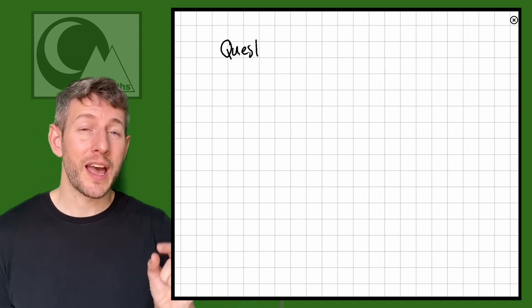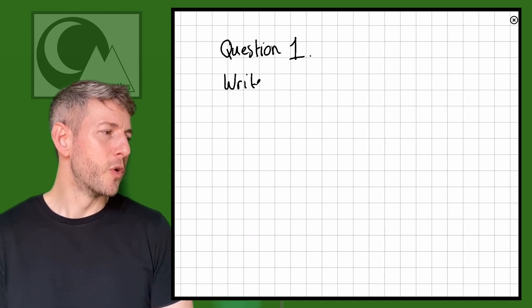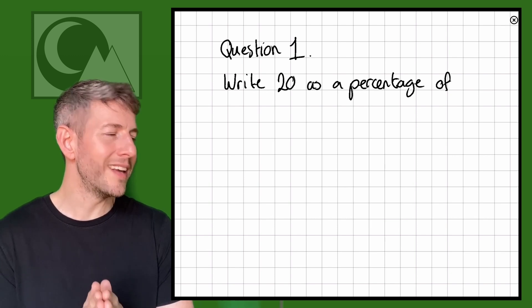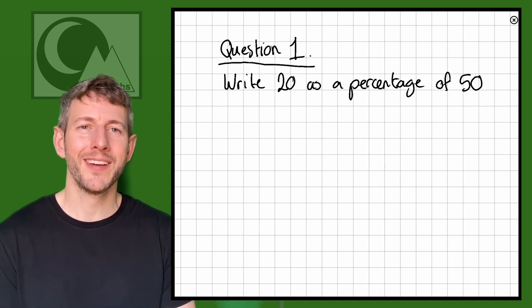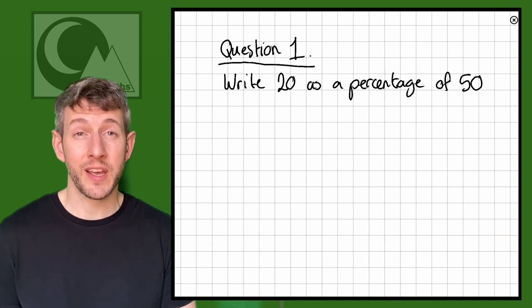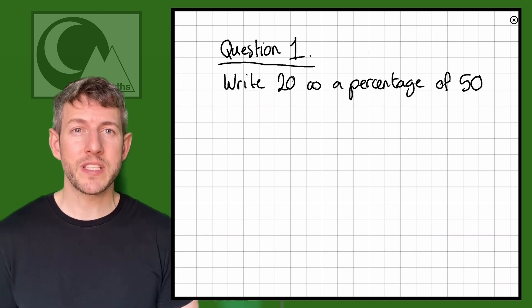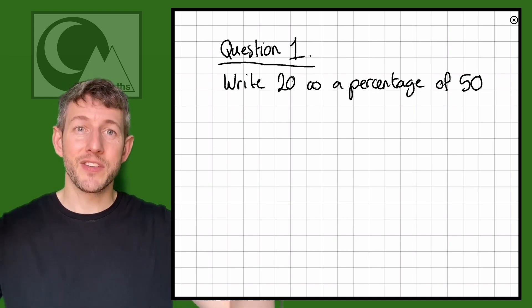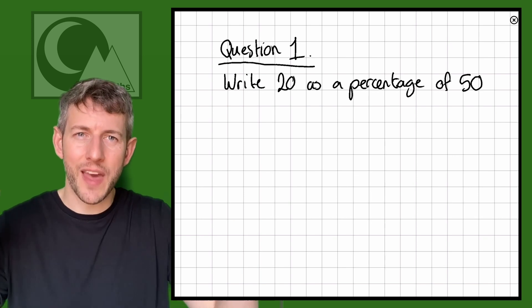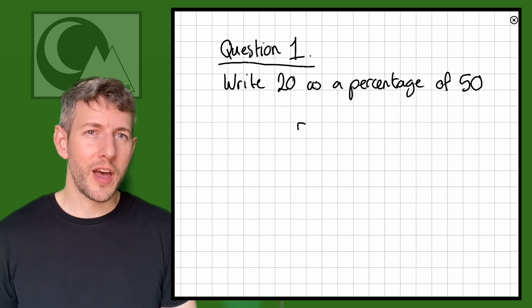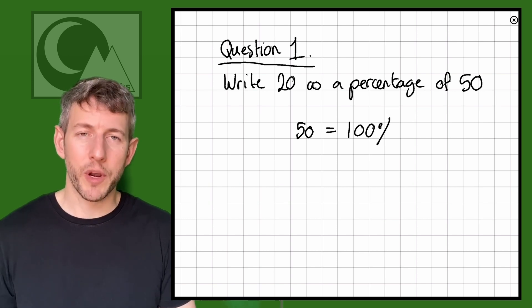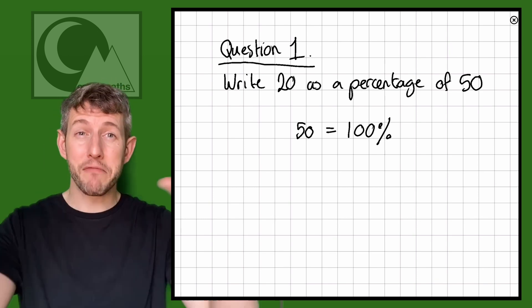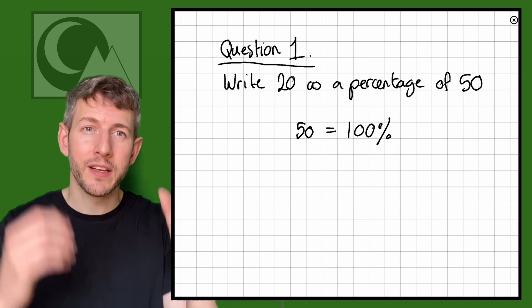So let's have a look at this question here. First of all I'm going to look at question one and this says write 20 as a percentage of 50. So there we have it, 20 as a percentage of 50. As I said I'm going to tackle this method using direct proportion. So that means that we know that the percentages increase and decrease together with the amounts. So let's say 50 is our 100% because we want to know what 20 is a percentage of 50. If 50 is everything, what percentage of everything is 20?